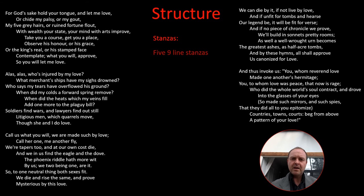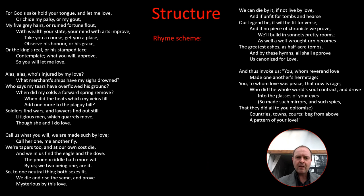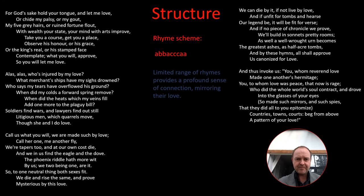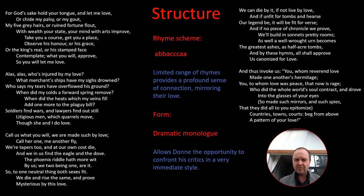In terms of the structure of the poem, it's written in five nine-line stanzas, the regularity of which could represent the enduring nature of their love. The metre is iambic throughout, but it switches between pentameter and tetrameter, although the final line of each stanza is trimeter, creating a shocking brevity that adds weight to Donne's conclusion at the end of each stanza. In terms of the rhyme scheme, we've got ABBACCCAA — a limited range of rhymes, perhaps complementing this sense of profound connection, the connections made all the more evident. And in terms of form, it's a dramatic monologue, which allows Donne the opportunity to confront his critics in a very immediate style.